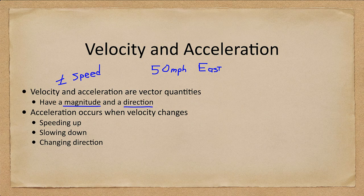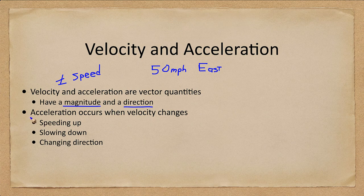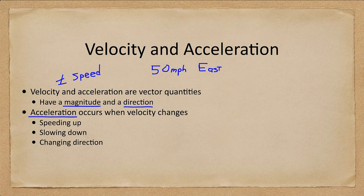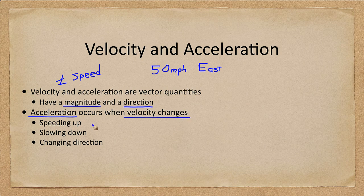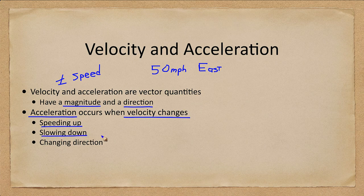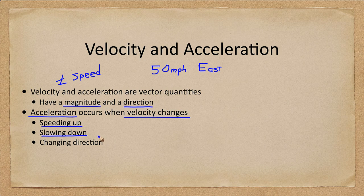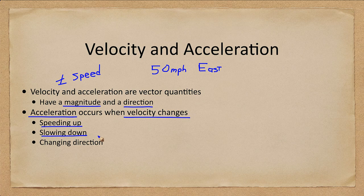Now we also look at acceleration. In acceleration we understand in everyday language as speeding up, going faster. That is when you are accelerating. However in reality an acceleration occurs whenever a velocity changes. So that can be speeding up. It can also be slowing down. We often call that a deceleration but in physics terminology it is an acceleration. It is just a decrease in velocity.